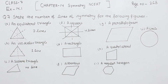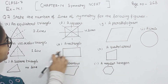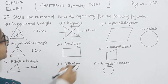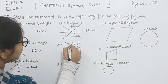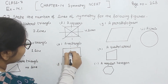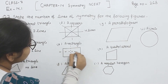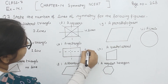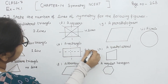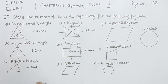Now, comes to part E. In part E, this is the rectangle. In this one, opposite sides are equal to each other. So we are going to draw the lines of symmetry. This can have two lines of symmetry.